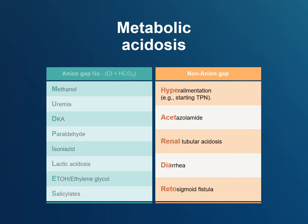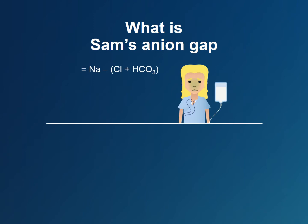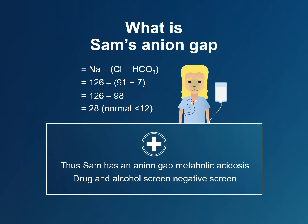A non-anion gap metabolic acidosis usually results from the loss of bicarbonate from the kidneys or the gastrointestinal tract. The anion gap is calculated by subtracting serum bicarbonate and chloride from serum sodium. Sam's anion gap is 28, which is very high. Thus, Sam has an anion gap metabolic acidosis. A drug and alcohol screen was performed in the emergency department and it returned negative.